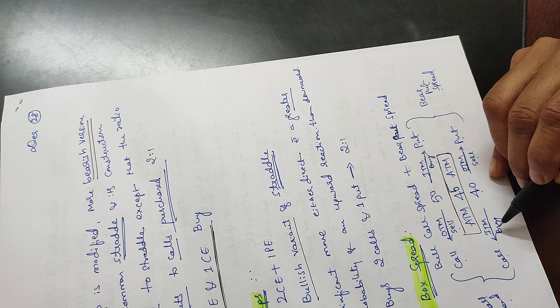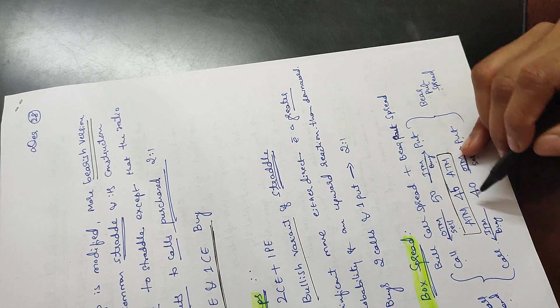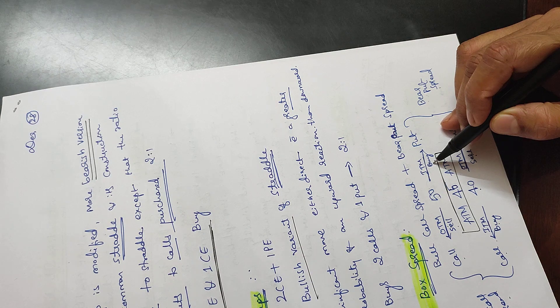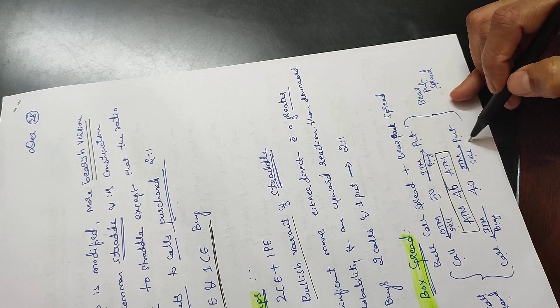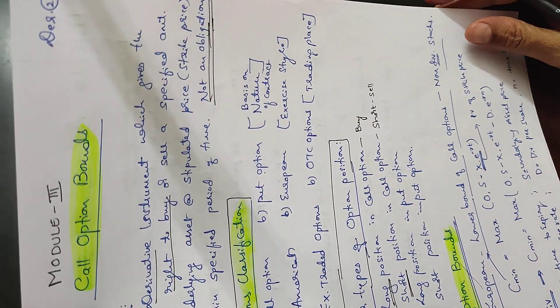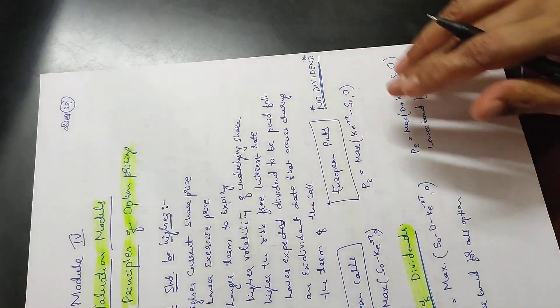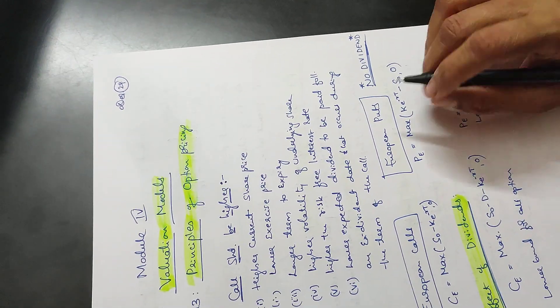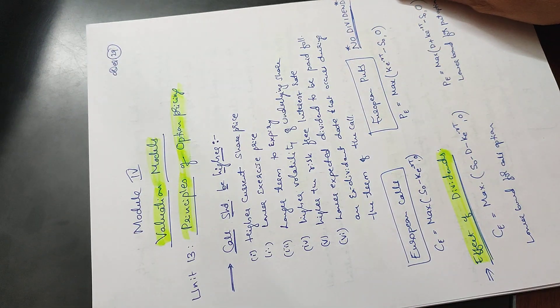Box spread: buy one in-the-money call, buy one in-the-money put, sell one out-of-the-money call, and sell one out-of-the-money put. This completes module 3. Next, coming to module 4 — valuation of the models — which will be covered in the next video.